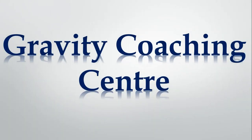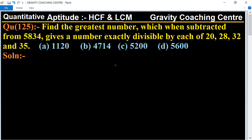Welcome to Gravity Coaching Center. Quantitative Aptitude chapter HCF and LCM, question number 125: Find the greatest number which, when subtracted from 5834, gives a number exactly divisible by each of 20, 28, 32, and 35.